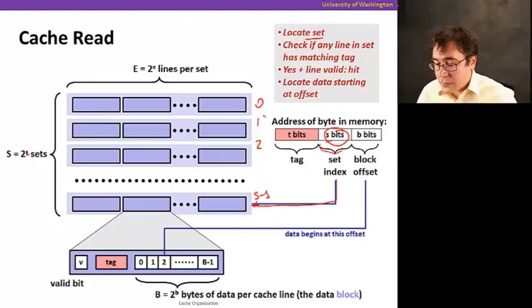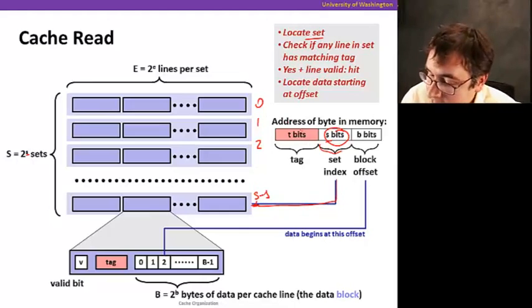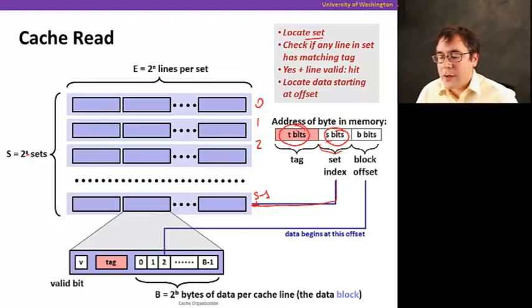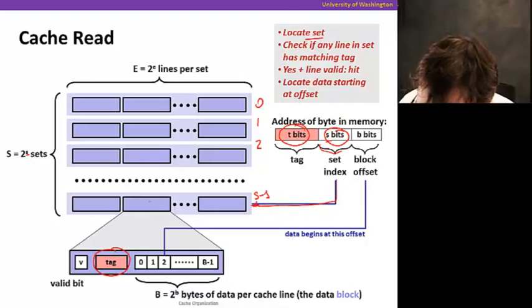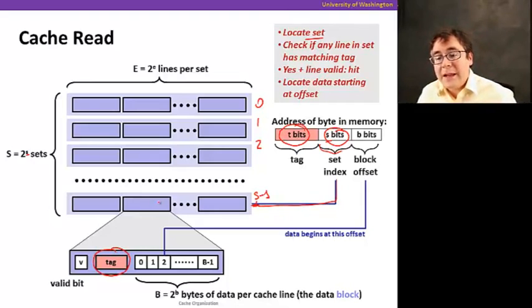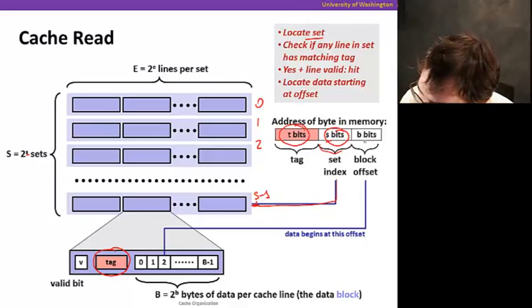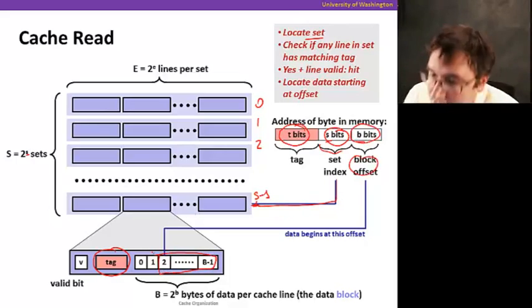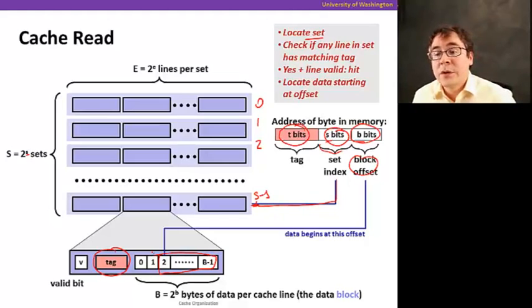Once we do that, what we're going to do is we're going to see whether the tag of the address, this t bits, the upper part of the address, matches the tag stored in the block. And then we're going to use the lower part of the address, the block offset, to determine which part of the block we are going to read, because a cache block or a cache line can be 16, 32, 64 bytes, but often we read one register's worth of data, which could be 4 or 8 bytes, or maybe 1 byte only, so we have to get only part of the block.